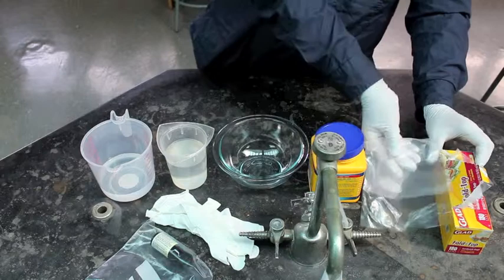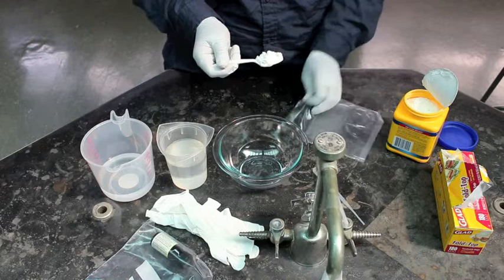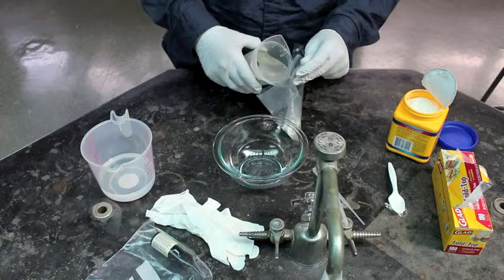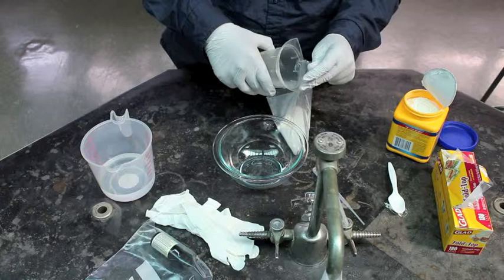So first off, we're going to get one tablespoon of corn starch and put it in our bag. Next, we're going to fill the bag halfway with water and we're going to stir it until all the corn starch dissolves.